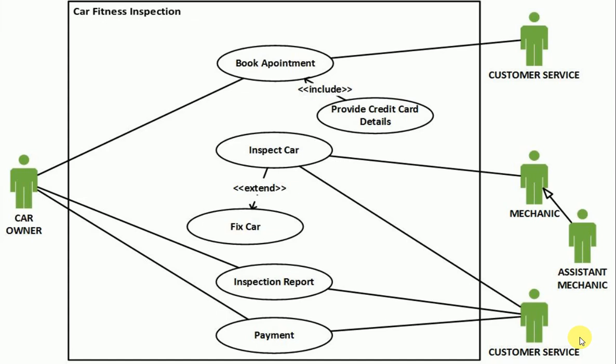This is how we can develop a use case diagram to understand the big picture of a system. There is no specific right or wrong solution — different people might come up with a slightly varied version for the same system. Some might be a bit more efficient, some a bit less, but there is no completely right or wrong answer. It completely depends on how the system is being operated.